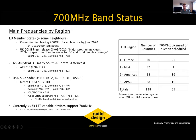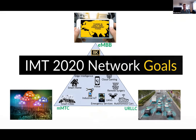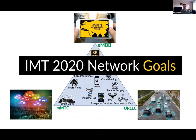Looking at the licensing status table from Spectrum Monitoring — which monitors 138 of the 193 ITU member states — about 55 countries have either already licensed 700 MHz spectrum or have auctions planned in the near future. Back around 2015, the IMT 2020 network goals were defined, setting the requirements for 5G.